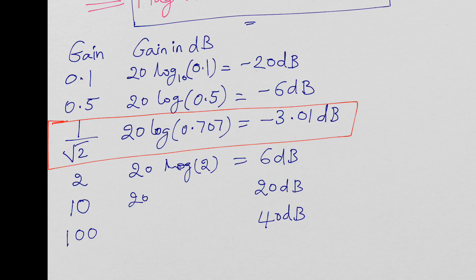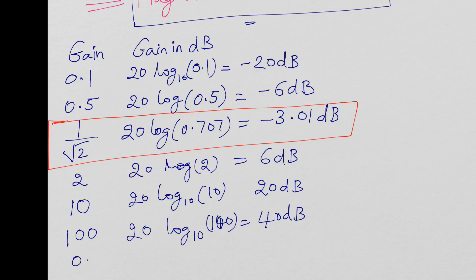A gain of 100 works out to 40 dB, since 20·log₁₀(100) = 40. Conversely, a gain of 0.01 (1/100) gives −40 dB. This is how gain is converted to decibels.